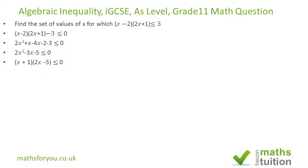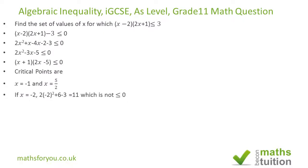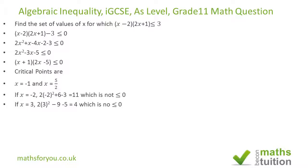We now need to factorize to find the critical points. Our critical points are x = −1 and x = 5/2. We don't have to test all values, but suppose we choose x = −2 (less than −1) and substitute into the expression — we get 11, and 11 is not less than 0, so values less than −1 are not valid. Similarly, testing x = 3 (greater than 5/2) gives 4, which is also not less than 0, so values greater than 5/2 are not valid either.